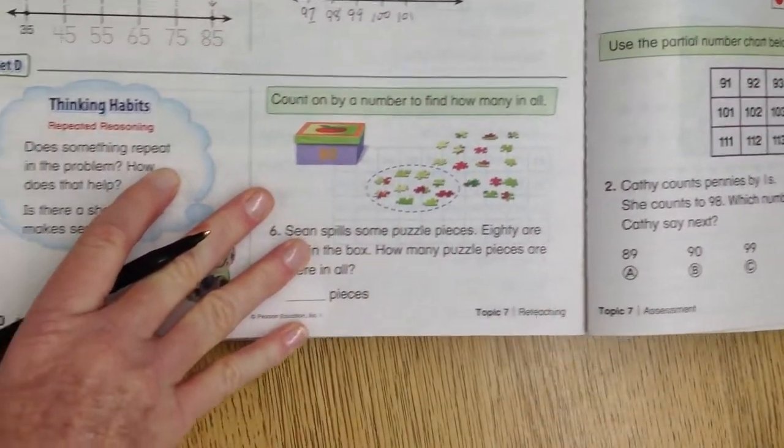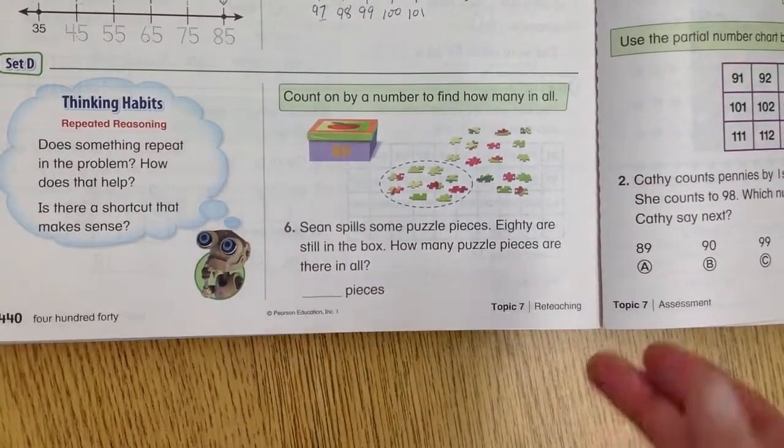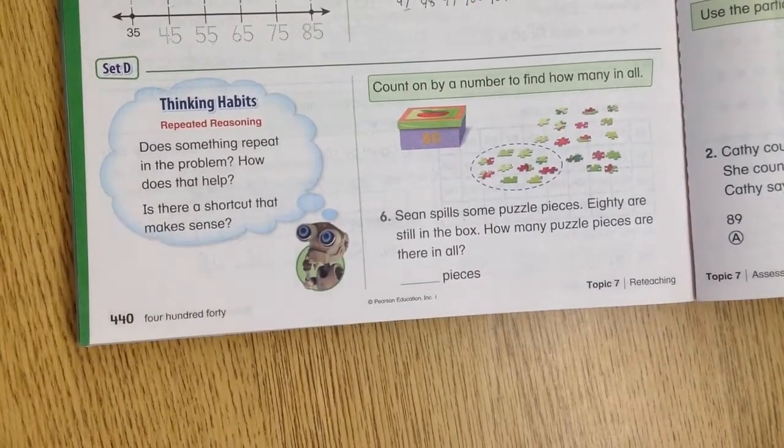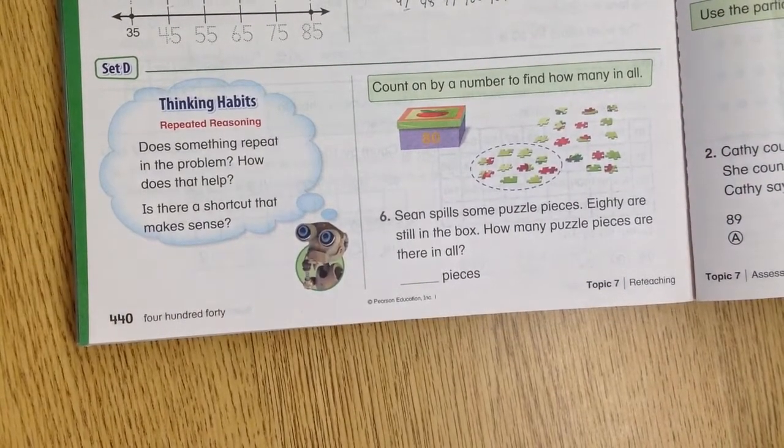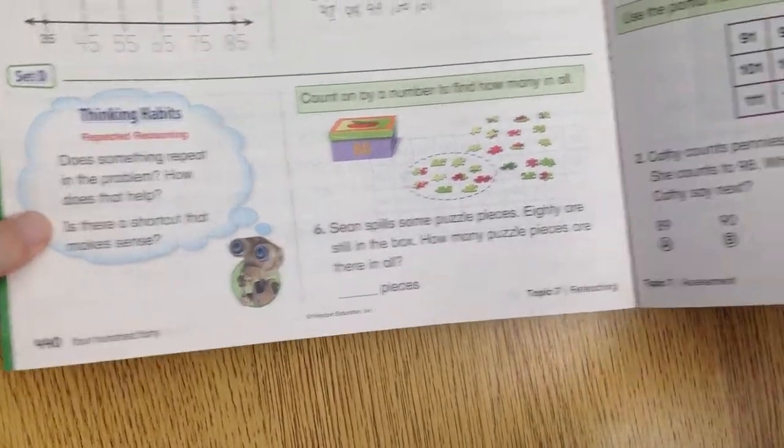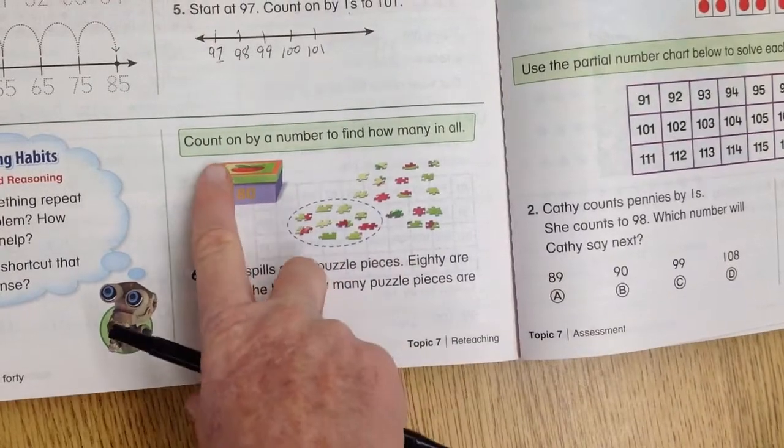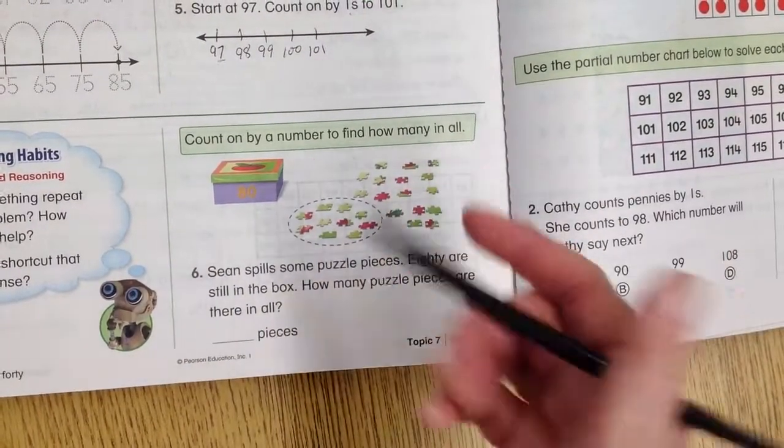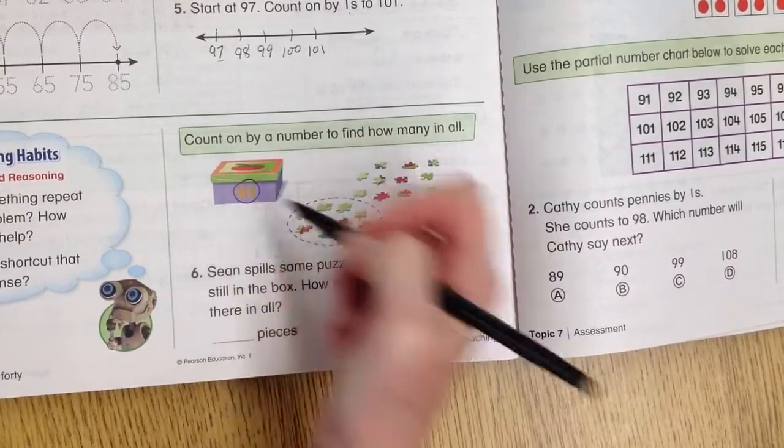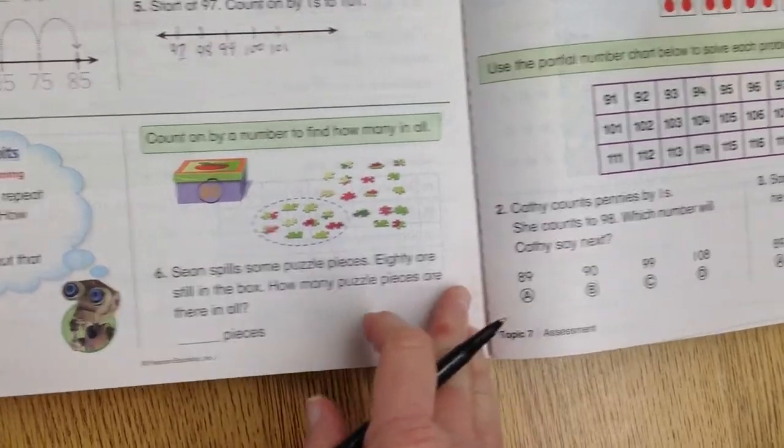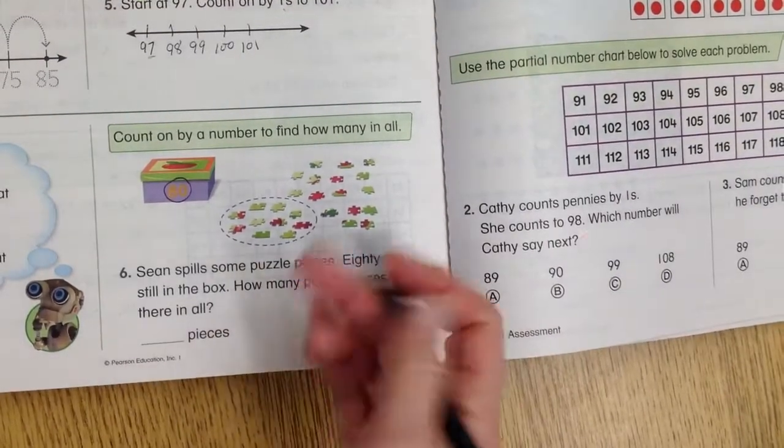All right, set D says, does something repeat in the problem? How does that help? Is there a shortcut that makes sense? Because shortcuts are always wonderful if they make sense. Here we have count on by a number to find how many in all. If you remember, we start at the number that's in the box, and then we find a shortcut. And the shortcut is, let's group them by tens.